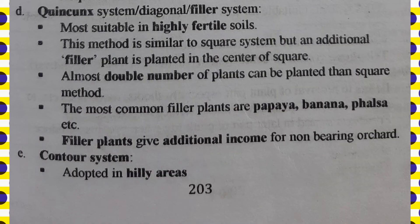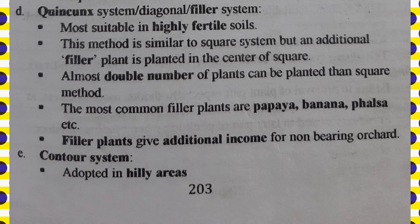The next one is the quinquennus system, also known as the diagonal or filler system. This method is similar to the square system but with an additional filler plant placed in the center of the square. This means almost double the plants are planted compared to the square system — hexagonal gives 15% more, while quinquennus gives double. Common filler plants used are papaya, banana, falsa, etc. Filler plants provide additional income for non-bearing orchards.